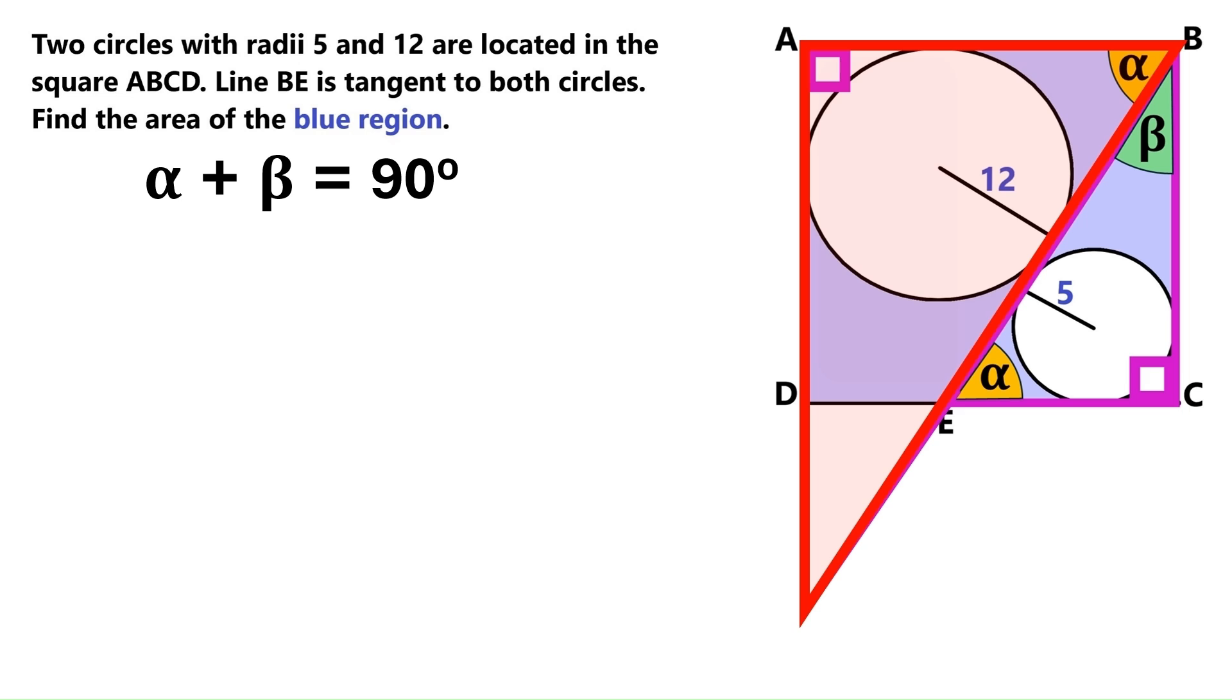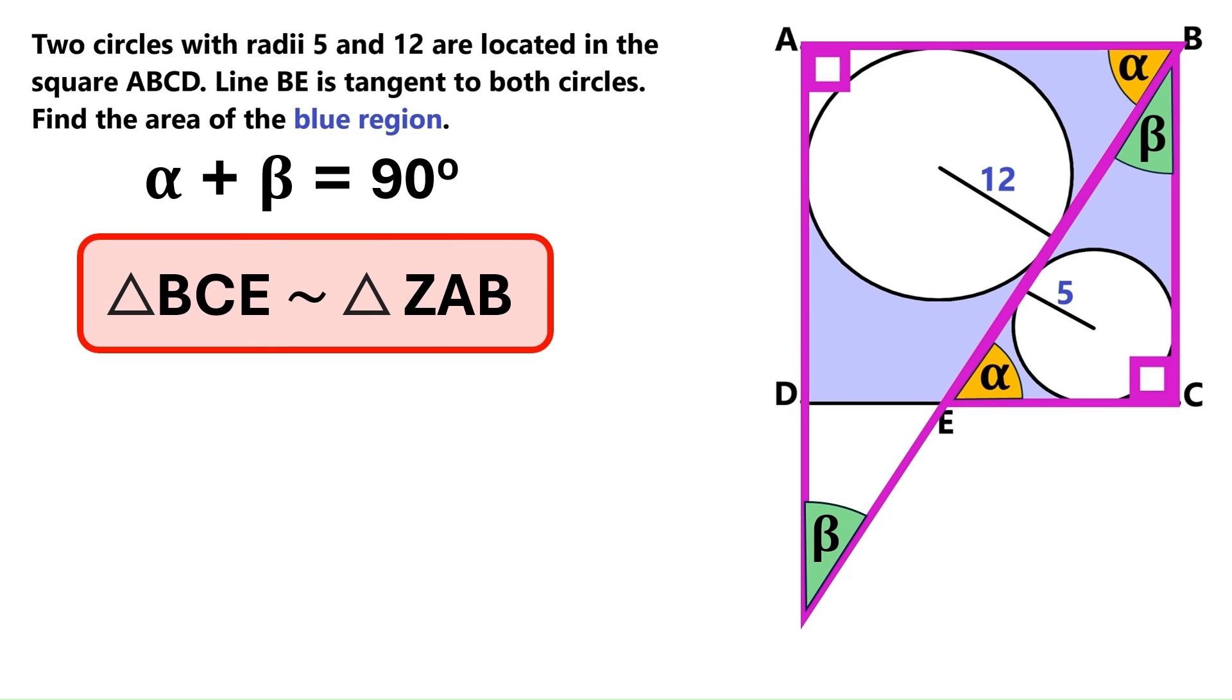We've got this big right triangle, and we know this angle is alpha, so this angle must be beta. It turns out this big right triangle and this small right triangle are similar. Let's write it down like this. The point Z is down here by the way.